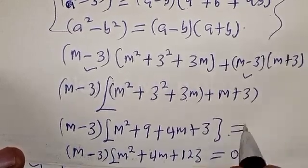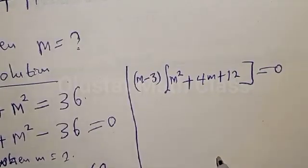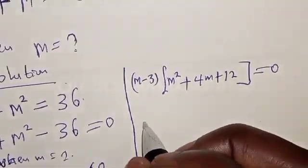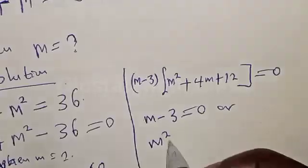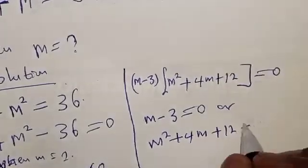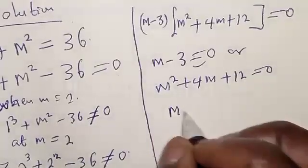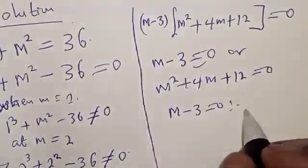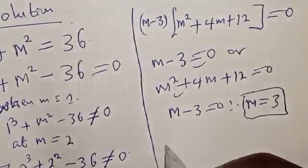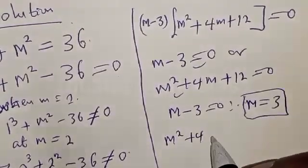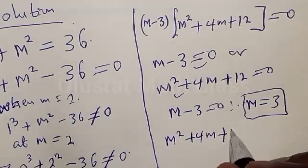Remember this whole expression is equal to 0, so we have two cases. The first case is m minus 3 equal to 0, or m² plus 4m plus 12 equal to 0. From the first case, m minus 3 equal to 0, therefore m is equal to 3. That is one of the answers. From the second case, m² plus 4m plus 12 equal to 0.